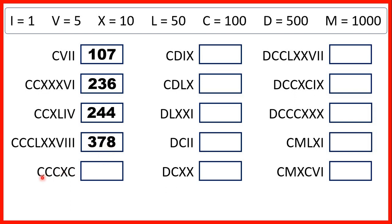Now we have three Cs next to each other, so that's 300. And then we have an X before a C, so that's 10 before 100, which is 90. So our number is 390.